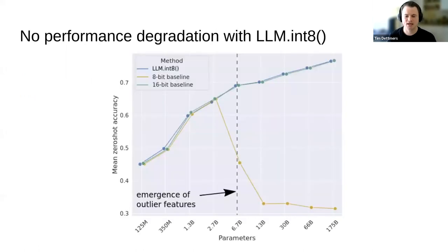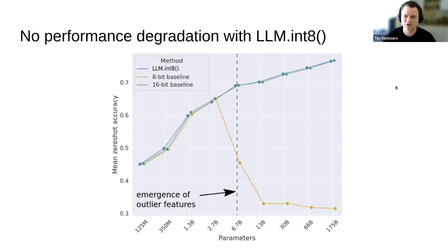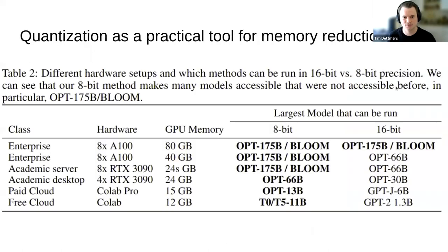We have one matrix multiplication for outliers in 16-bit, one for non-outliers in 8-bit, then add them together to get the final output. This is still very efficient because 99.9% of weights are in 8-bit — we just need to store a couple of 16-bit weights. Looking at the graph again, in blue our method LLM.int8() with this decomposition replicates the full 16-bit performance. The model is just as good as 16-bit but with 8-bit weights — half the memory size, making these models much more accessible.